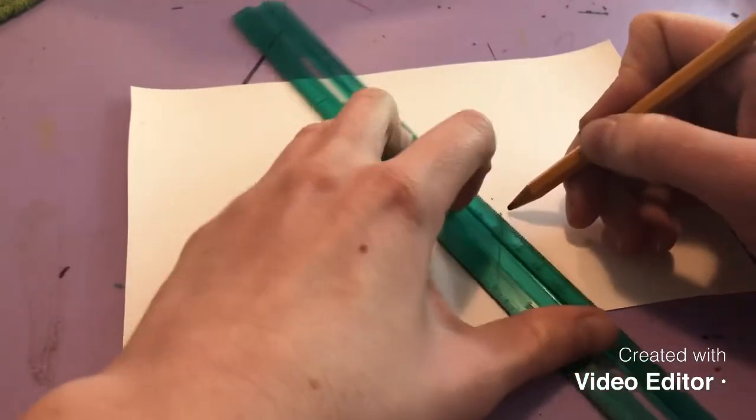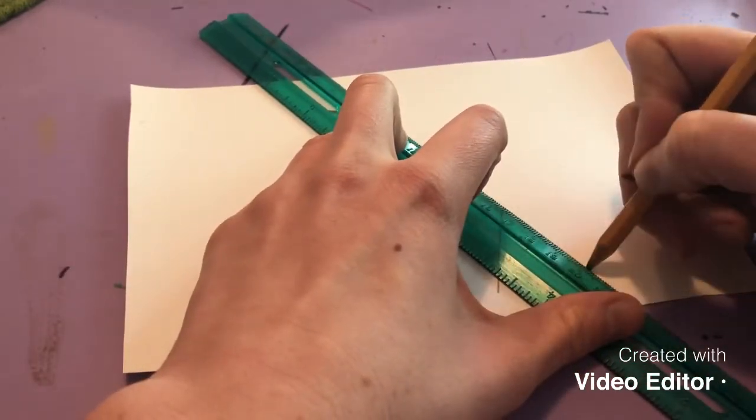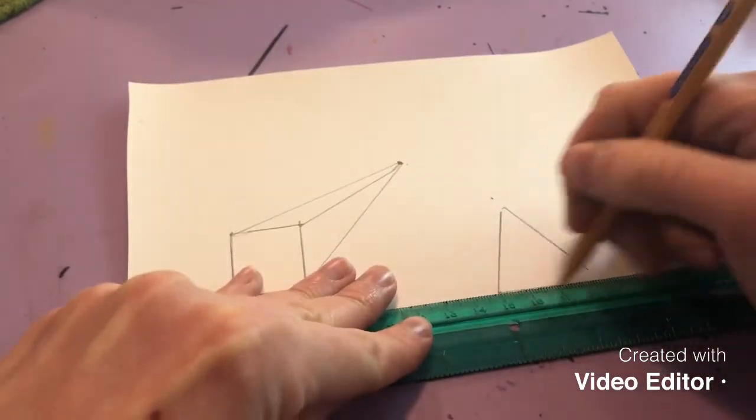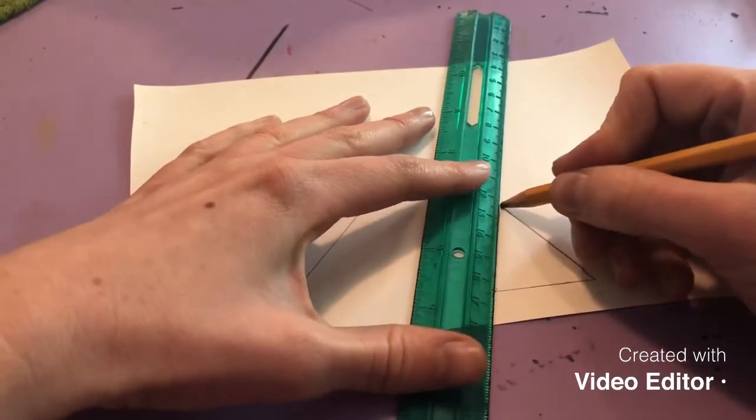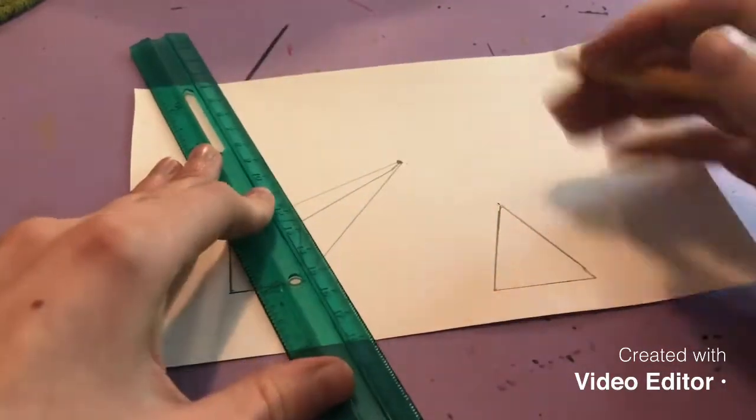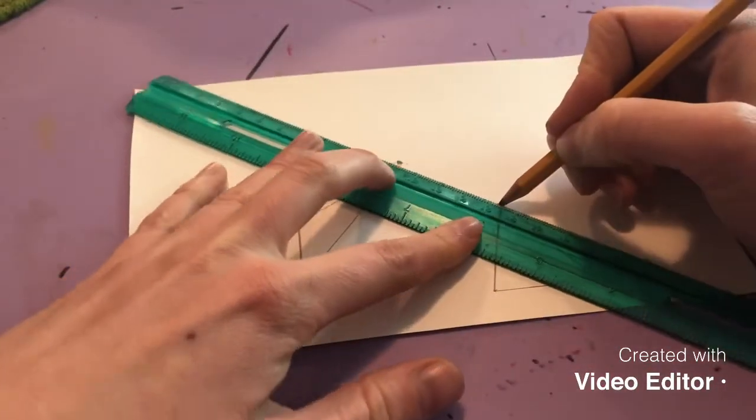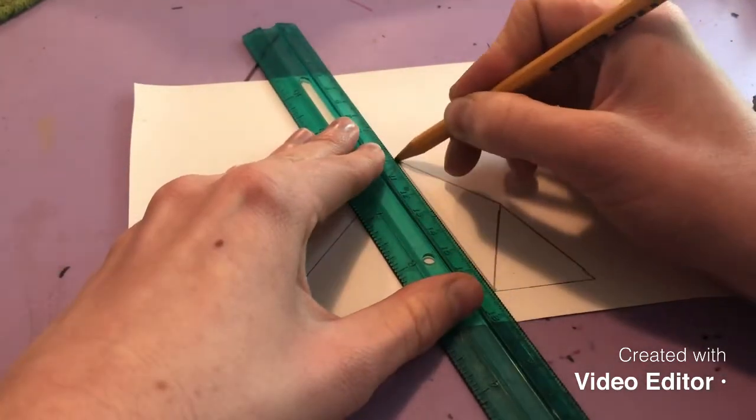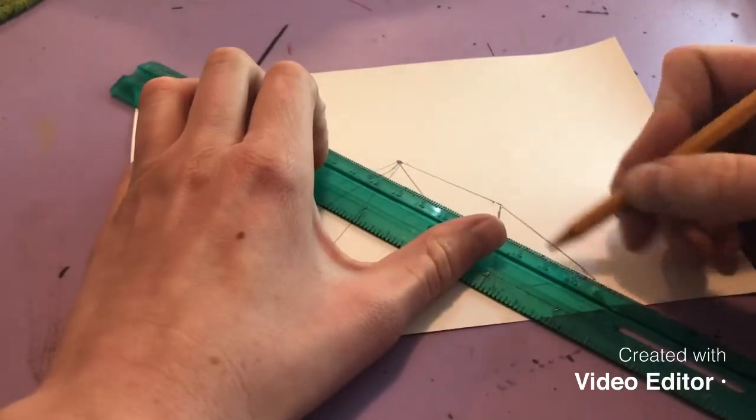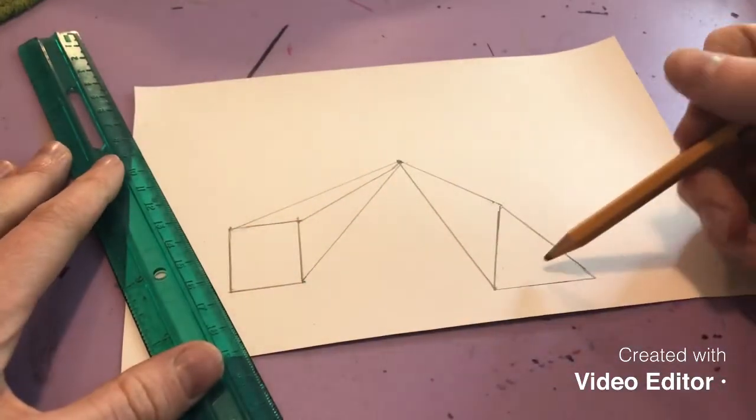I'm gonna do a triangle. Okay so I'm gonna connect that point and that point to the vanishing point. Now when I go to connect this it cuts through the face so that's all you need for this shape.